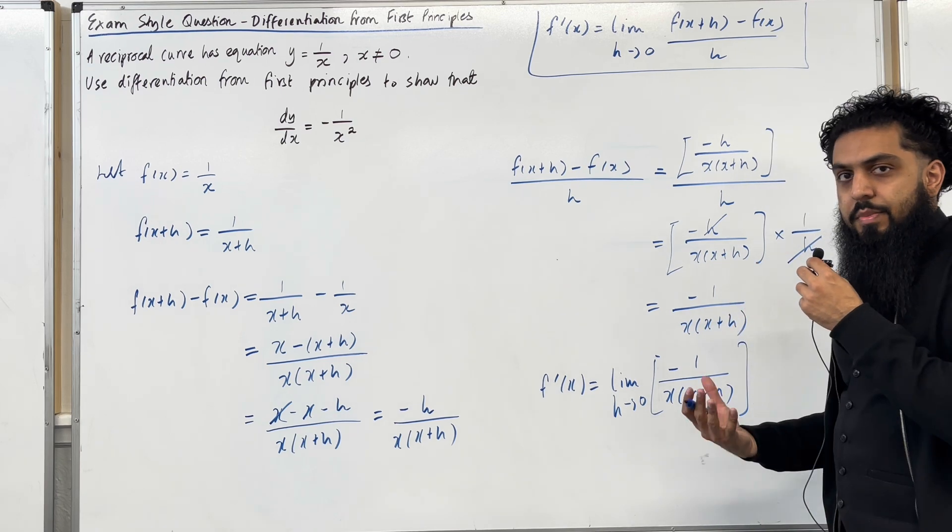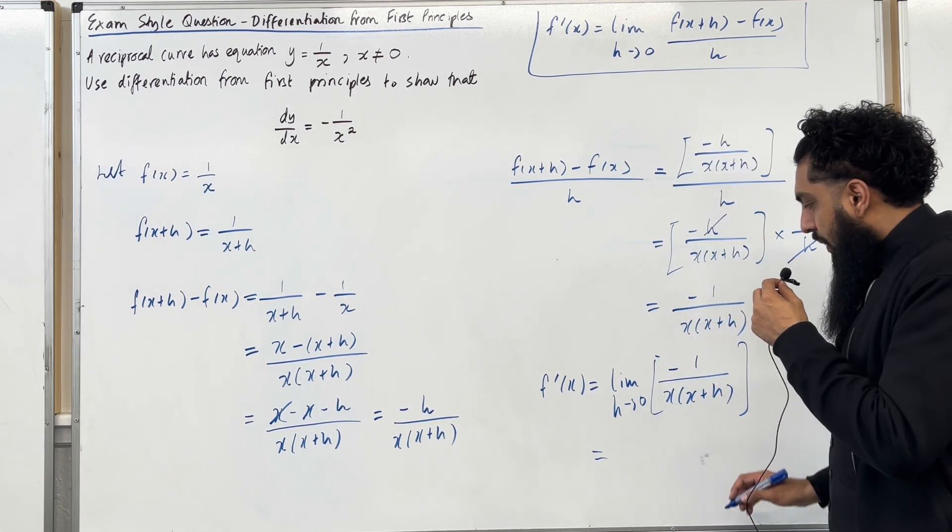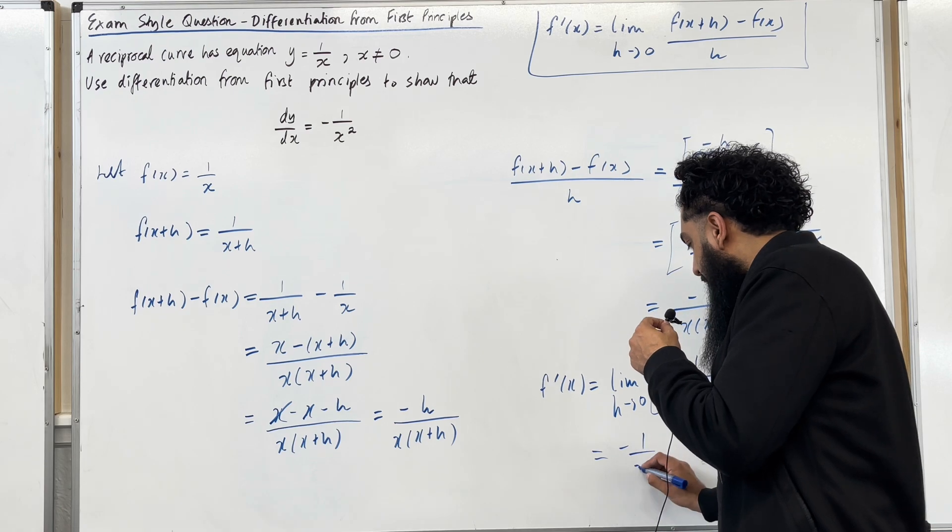So we take h to be 0. So when h is 0, we end up with minus 1 over x squared.